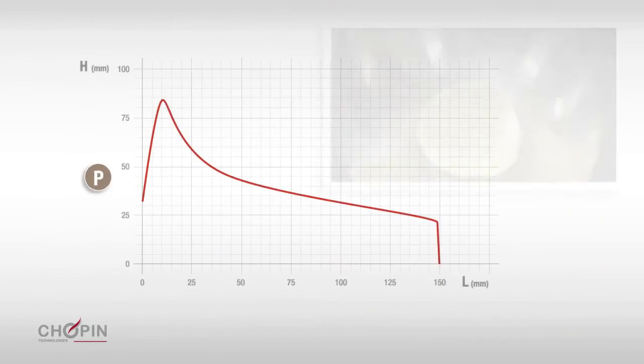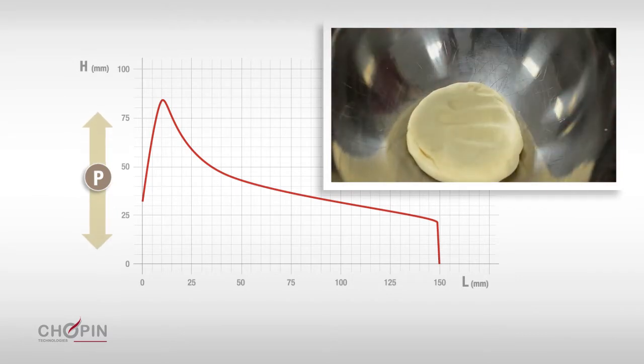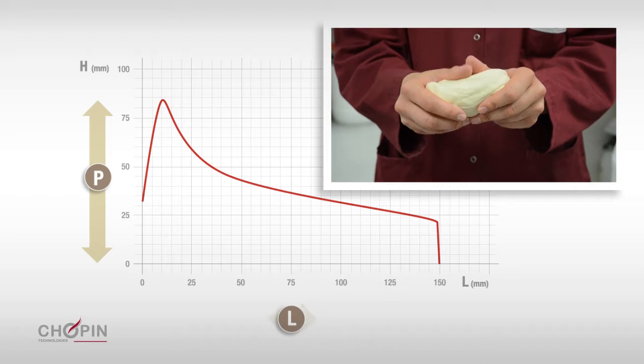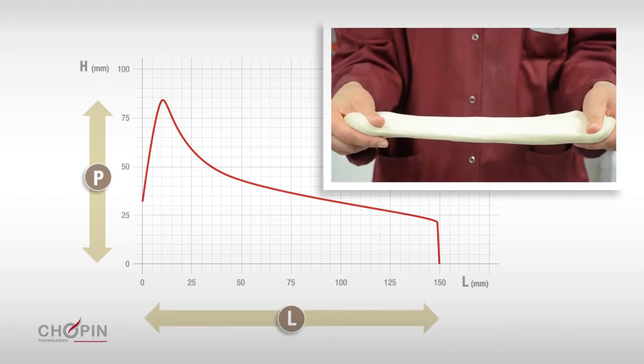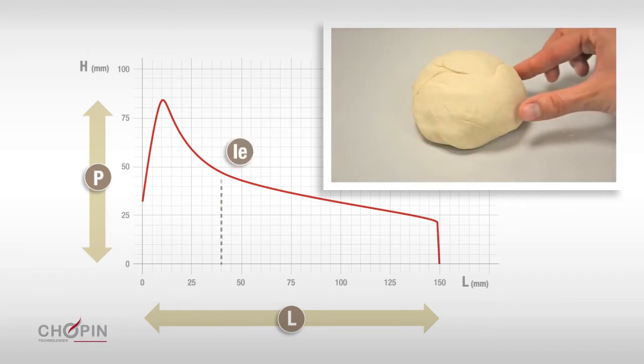P value represents dough tenacity, in other words its capacity to resist deformation. L value corresponds to the maximum amount of air the bubble is able to contain and represents dough extensibility. IE value corresponds to the elasticity index. And finally W value indicates dough baking strength.